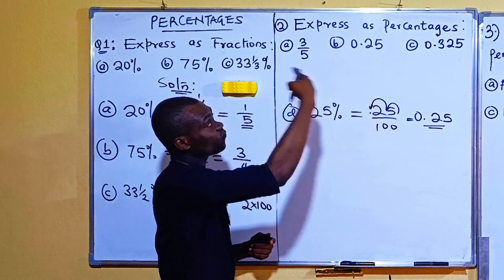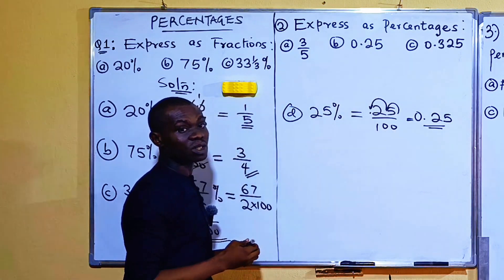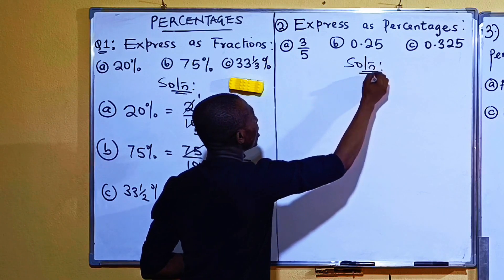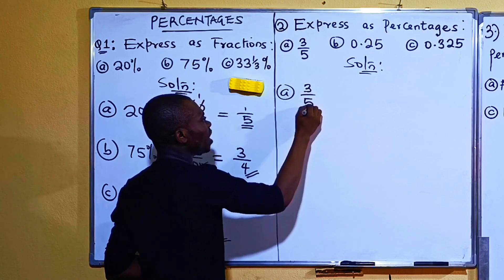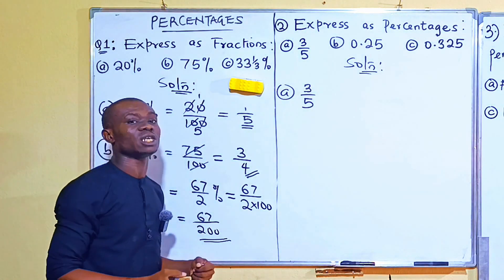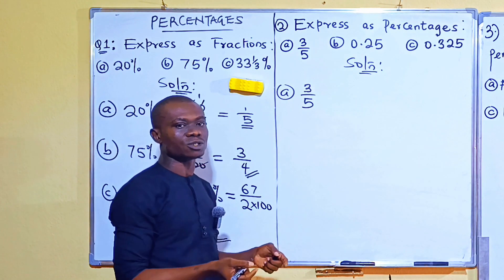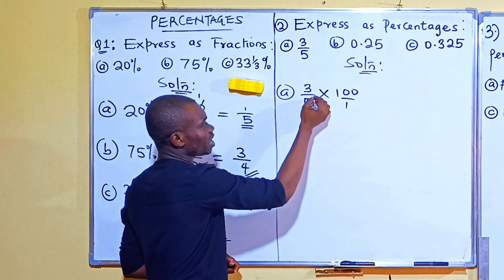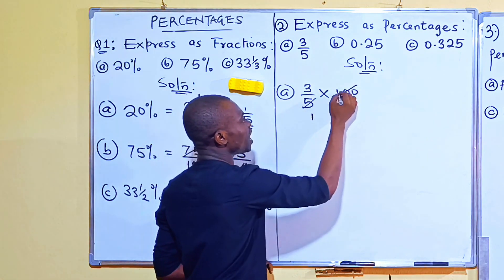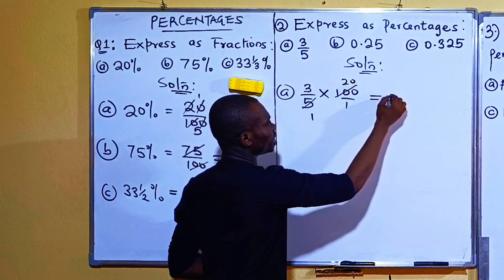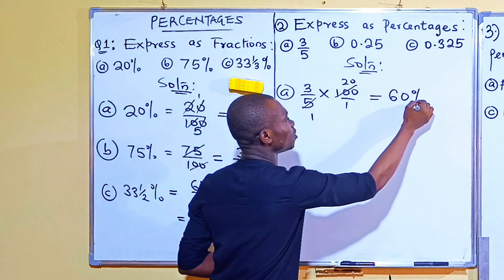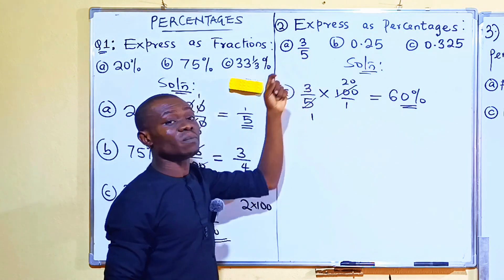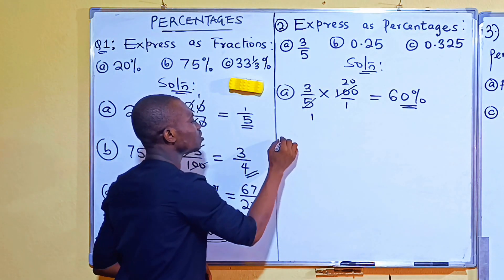Of course if you return 0.25 back to a percentage you will get 25% again. For example two, part a: we have 3 over 5. To change a fraction to a percentage, multiply by 100. So 3 over 5 times 100 over 1 — simplify: 5 into 100 is 20, and 3 times 20 is 60. So 3 over 5 equals 60%. If you change 60% back to a fraction you get 3 over 5.